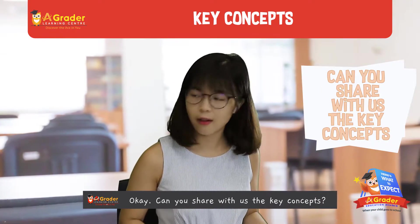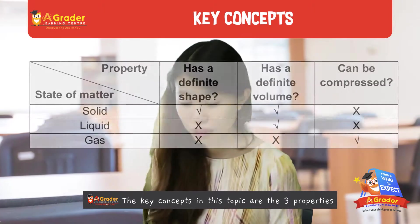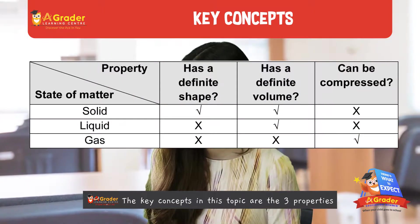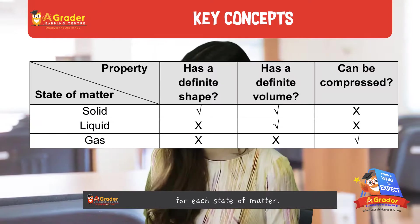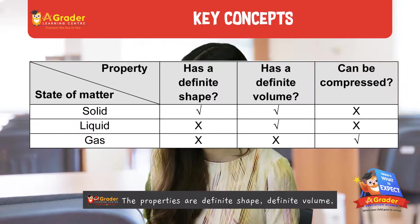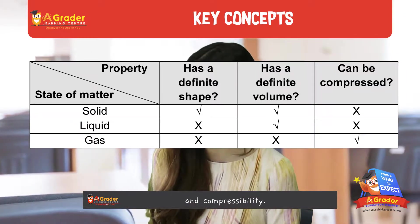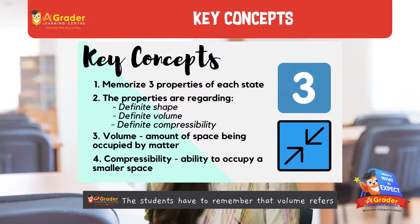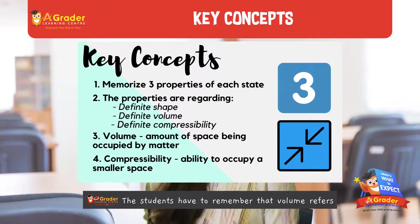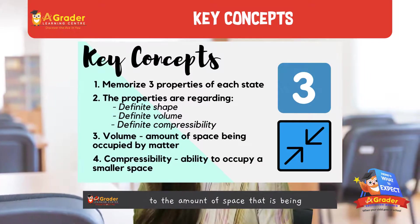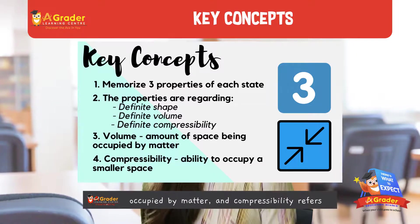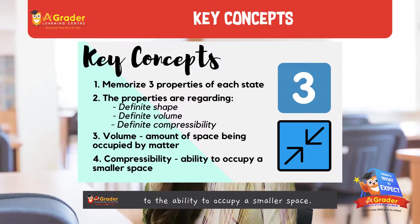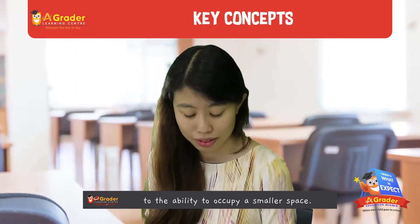Can you share with us the key concepts? For the key concepts in this topic, they have to remember or memorize three properties for each state, and the properties are regarding definite shape, definite volume, and compressibility. They also have to remember that volume refers to the amount of space occupied by matter, and compressibility refers to the ability to occupy a smaller space.